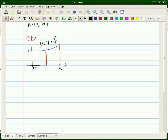We're going to use the method of cylindrical shells to find the volume of revolution around the y-axis of the region bounded by the x and y-axis, y equals 1 plus x squared over 4, and x equals 2.